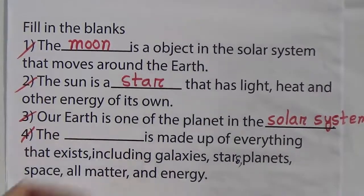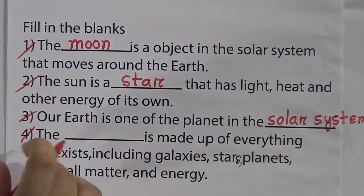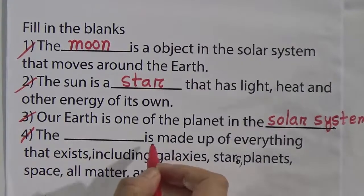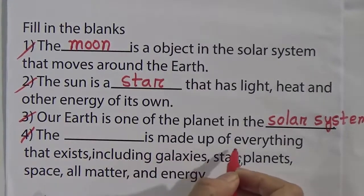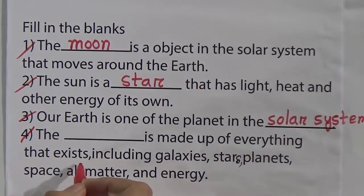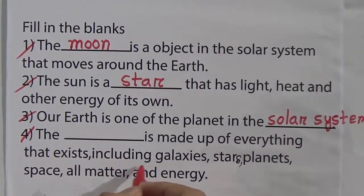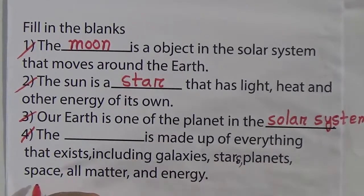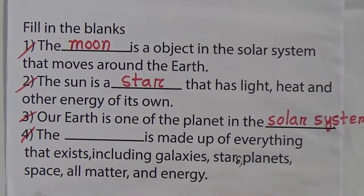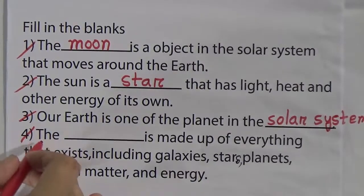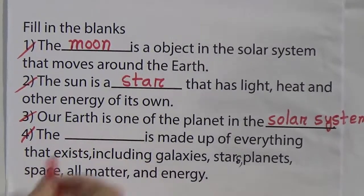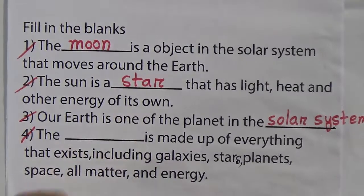Number four: the blank is made up of everything that exists, including galaxies, stars, planets, space, all matter and energy. The answer is 'the universe.' So we will write 'universe' here.